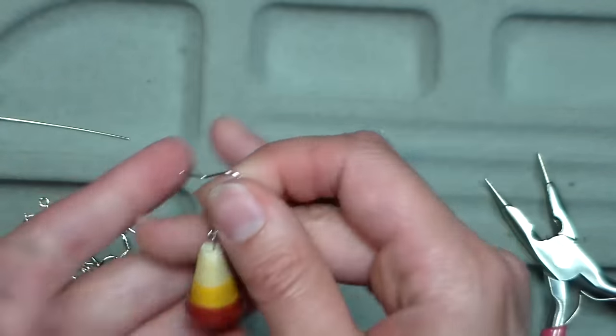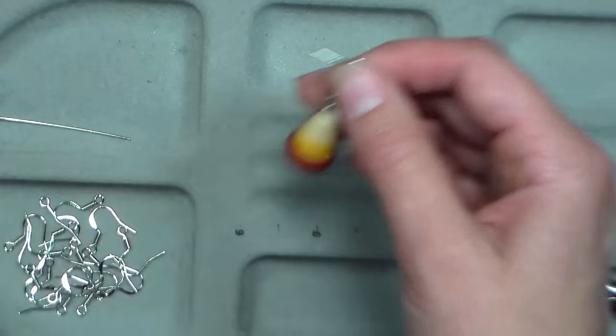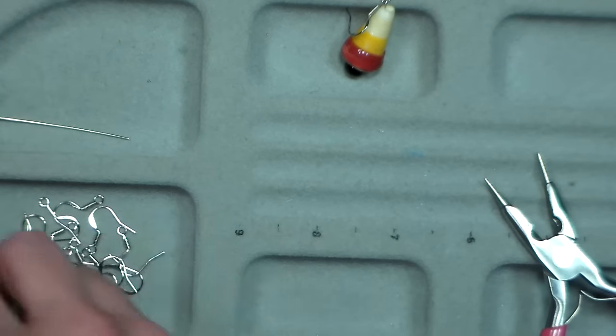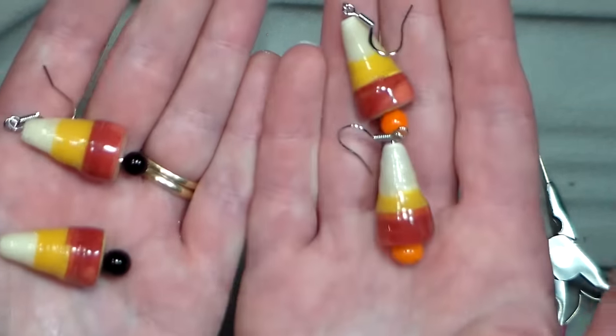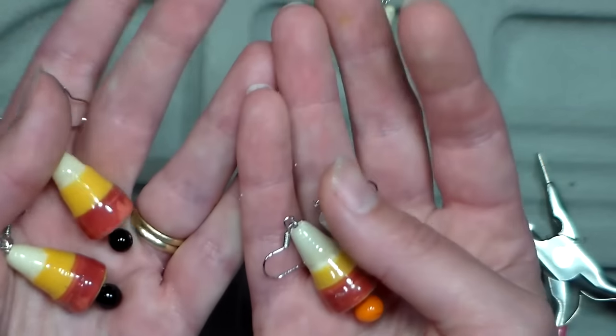So you could do like a witch's hat, you can do Christmas trees, you could do lobster buoys, you can do anything that's got that cone shape. And here's a couple pairs that I've already finished, and there you have it. I hope you enjoyed this tutorial today. If you have any questions you can leave them in the comments below.